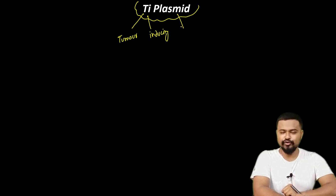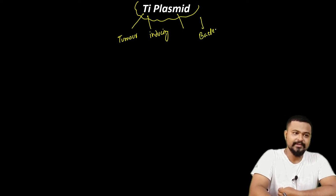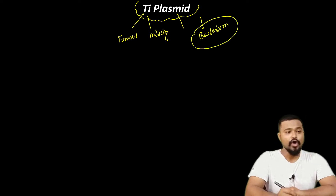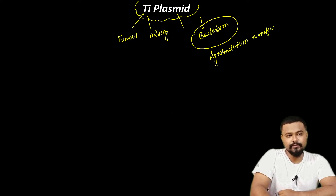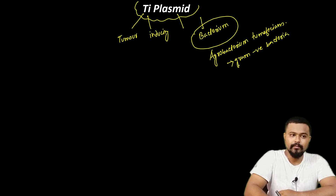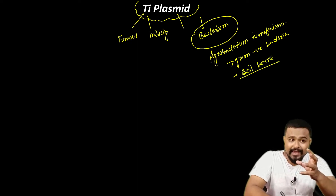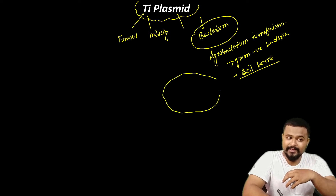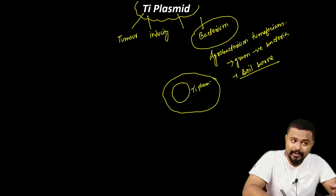The Ti Plasmid is called the Tumor Inducing Plasmid. The bacterium that carries it is Agrobacterium tumefaciens — a gram-negative, soil-borne bacterium that naturally contains this Ti plasmid.